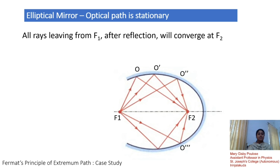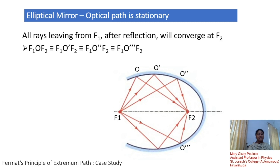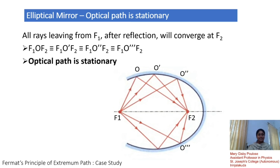That means the incident ray plus reflected ray gives the same value for all these paths. In effect, f1-O-f2 is identical to f1-O'-f2, which is identical to f1-O''-f2, and so on for all reflection points. Hence, we state that the optical path is stationary.